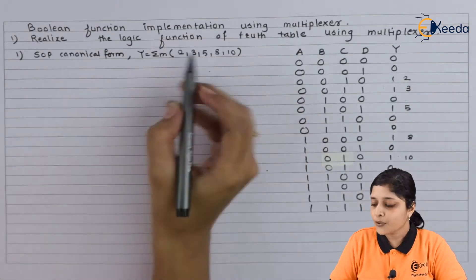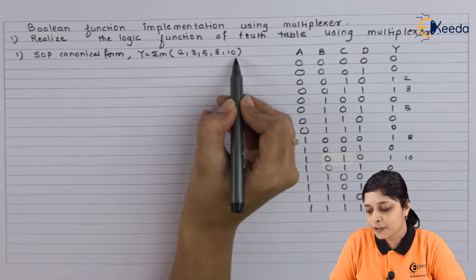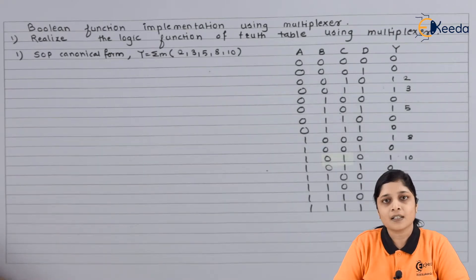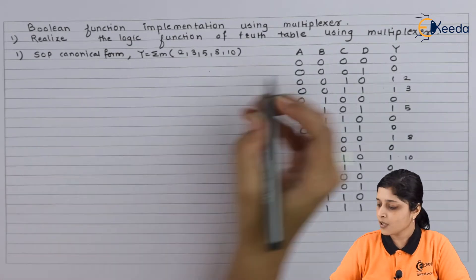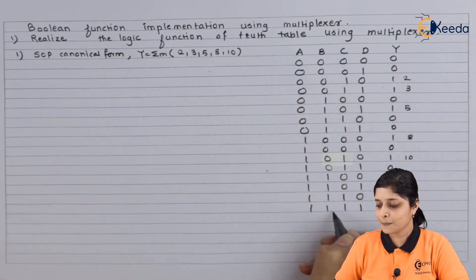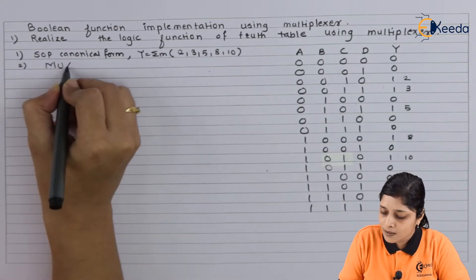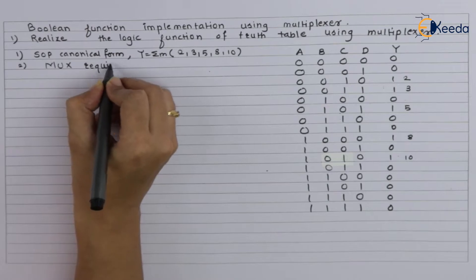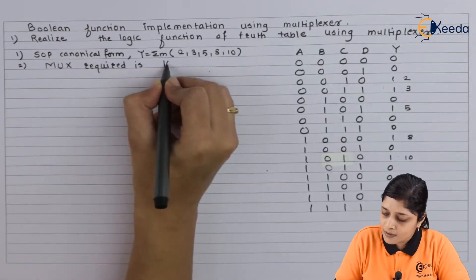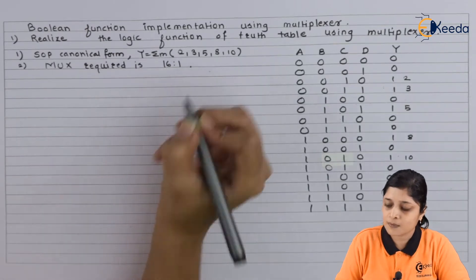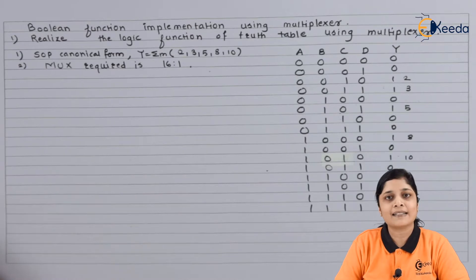Now we are going to connect all these terms to logic 1 and remaining terms to logic 0. Let's see how. The requirement of mux here is: how many inputs are present? 16 inputs are present, so mux required is 16 to 1, means it has 16 inputs and one output.